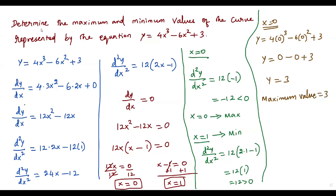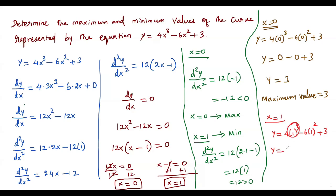To find the minimum value, we plug x equals 1 into the original function: y equals 4 times 1³ minus 6 times 1² plus 3. One cubed is 1, so 4 times 1 is 4; one squared is 1, so 6 times 1 is 6. Simplifying: 4 minus 6 plus 3 equals 1. The minimum value of the function is 1. So the maximum value is 3 and the minimum value is 1.